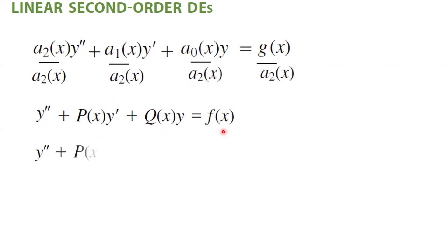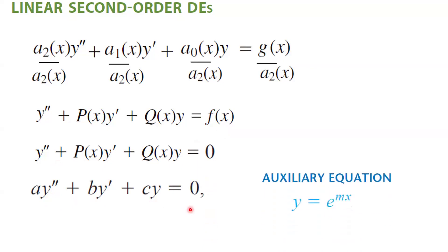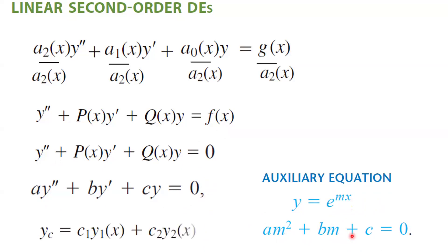The very first step is to assume that on the right-hand side you have 0. It's very similar to what we did before. If you have a second-order differential equation with constant coefficients, you form an auxiliary equation by using y equals e to the power mx, then you form am squared plus bm plus c equal to 0, and you divide it up into three different cases. In any case, we get a complementary solution as c1*y1 plus c2*y2. So this is your very first step: you set the right-hand side equal to 0 to find y1 and y2.